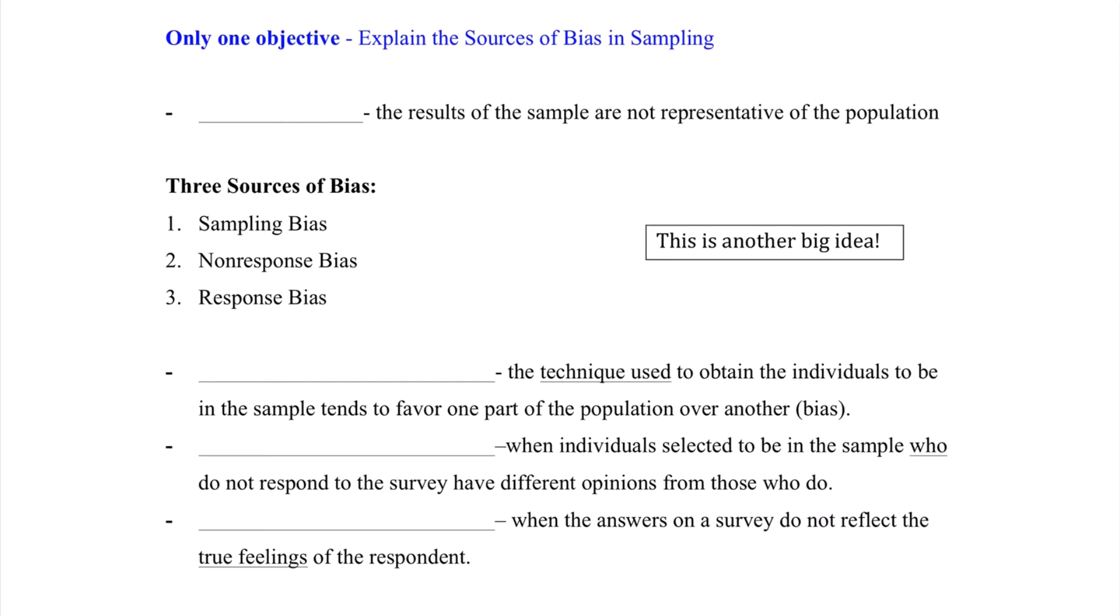Well first that means we need to discuss what is bias. Bias occurs when the results of the sample are not representative of the population. Usually people think that bias means that someone chose to do this or that, and that's not necessarily the case. It simply means that our sample results do not match the population results.